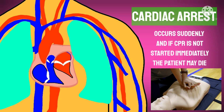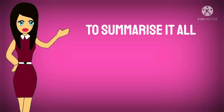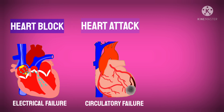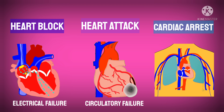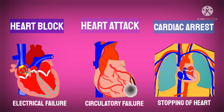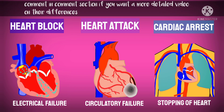So to summarize: heart block is an electrical failure, heart attack is a circulatory failure, and cardiac arrest is the complete stopping of the heart's function. These are the most basic differences between these three disorders. Comment in the comment section if you want a detailed comparison between the three.